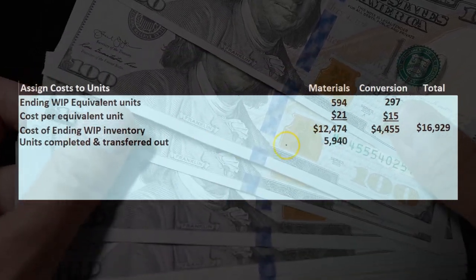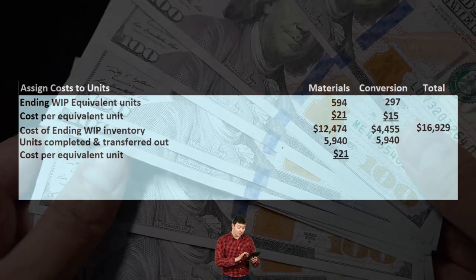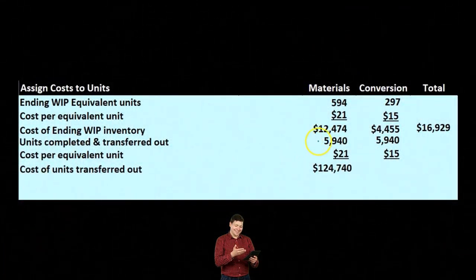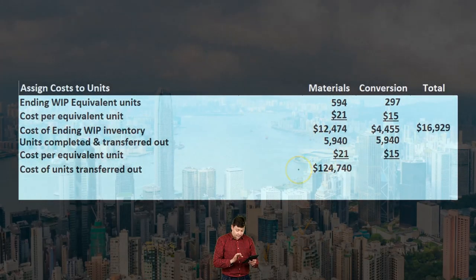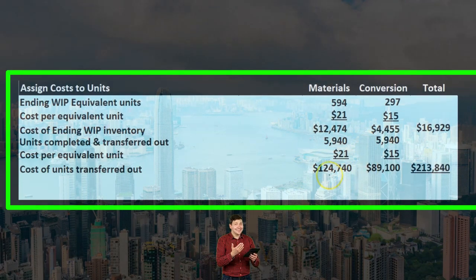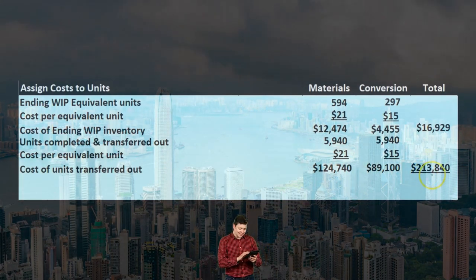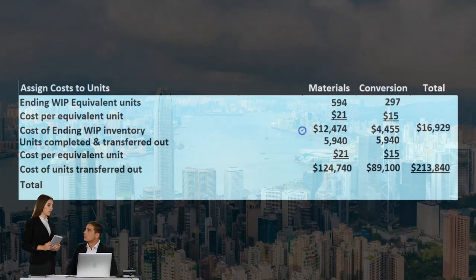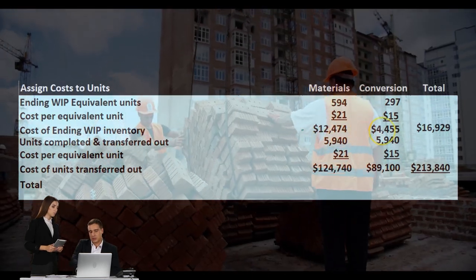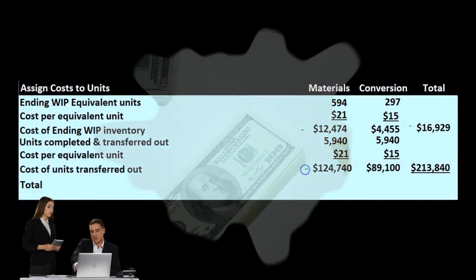For units completed and transferred out, we have 5,940 units for both materials and conversion. Multiplying 5,940 by the $21 cost per equivalent unit gives $124,740, and 5,940 times $15 gives $89,100. Adding those together gives us $213,840 — the total cost of units completed and transferred out in terms of materials and conversion.